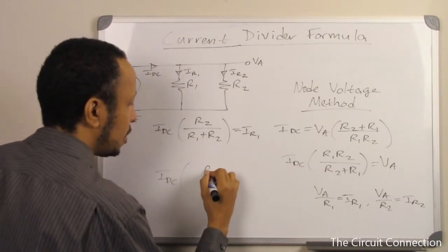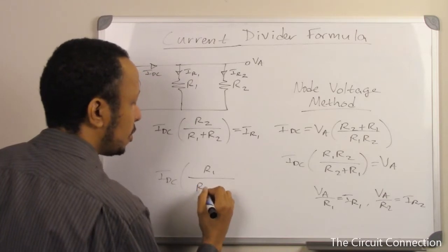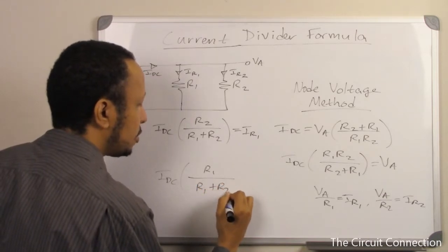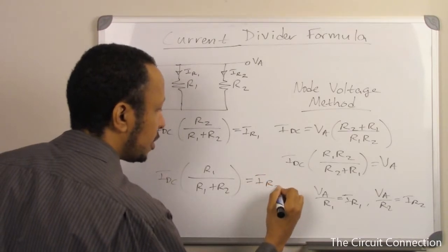We had R2 cancel out and we were left with R1 over R1 plus R2 gives us IR2.